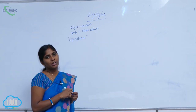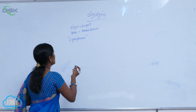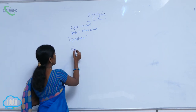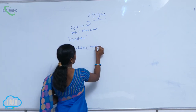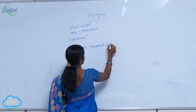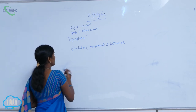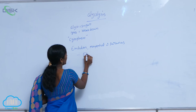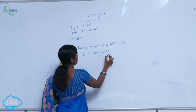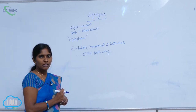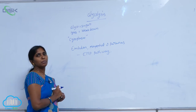Glycolysis was discovered by three scientists: Emden, Meyerhoff, and Parnas. In recognition of their contribution, the glycolysis pathway is named the EMP pathway — EMP standing for Emden, Meyerhoff, and Parnas. So glycolysis is also termed the EMP pathway.